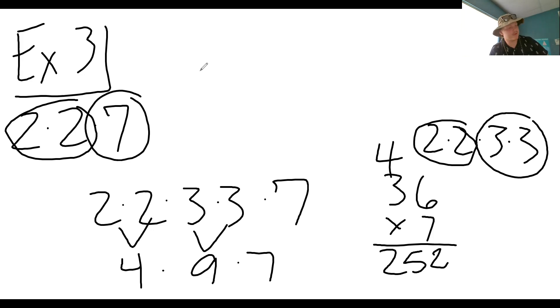Those examples are going to be the ones you're doing for letters C and D. It says mentally calculate each quotient by finding an equivalent division problem. For F through H, you just won't discuss your strategy with the class.